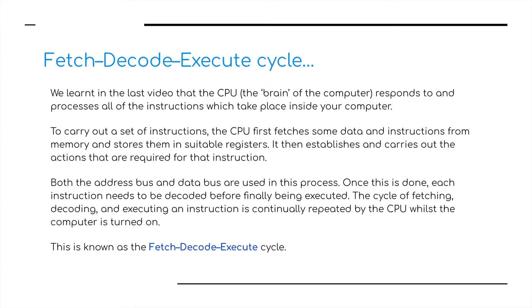Both the address bus and the data bus are used in this process. Once this is done, each instruction needs to be decoded before finally being executed. The cycle of fetching, decoding, and executing an instruction is continuously repeated by the CPU while the computer is turned on. It's basically the CPU talking to the component parts of the CPU and whatever is stored in the RAM, the main memory.